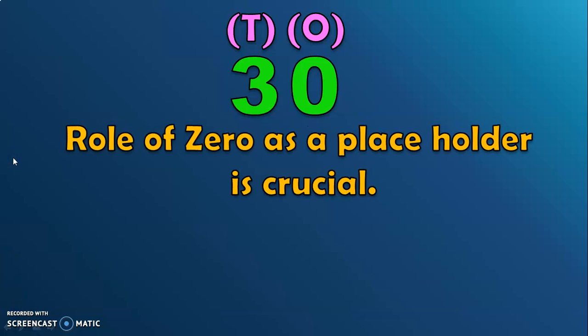Rule of zero as a placeholder is crucial. When zero is alone, it does not have a value. But, when it is used as a placeholder, it helps us to read and write numbers properly. And zero as a placeholder is important for giving the other digits their correct place value. Let us take another example.